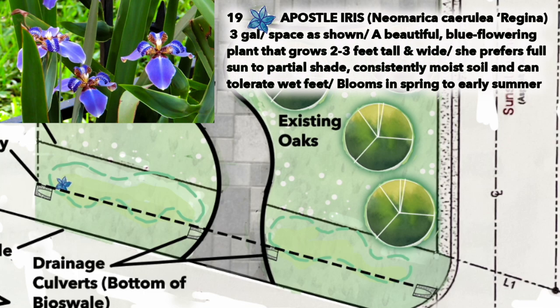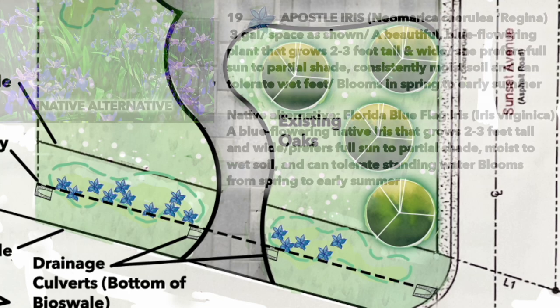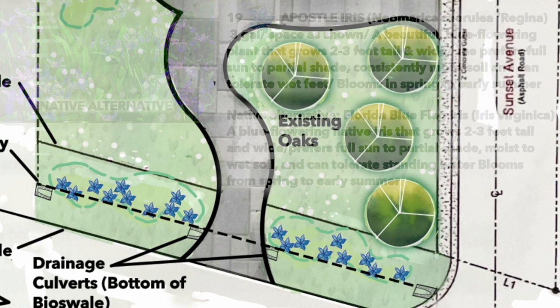First up is the Apostle Iris — a beautiful blue flowering grass-like plant. It'll grow to two to three feet wide and we have 19 of them selected for Bonnie's bioswale. You can see me laying them out here. There is also a native alternative called the Blue Flag Iris, which has really pretty dark blue flowers. You can also consider that plant.